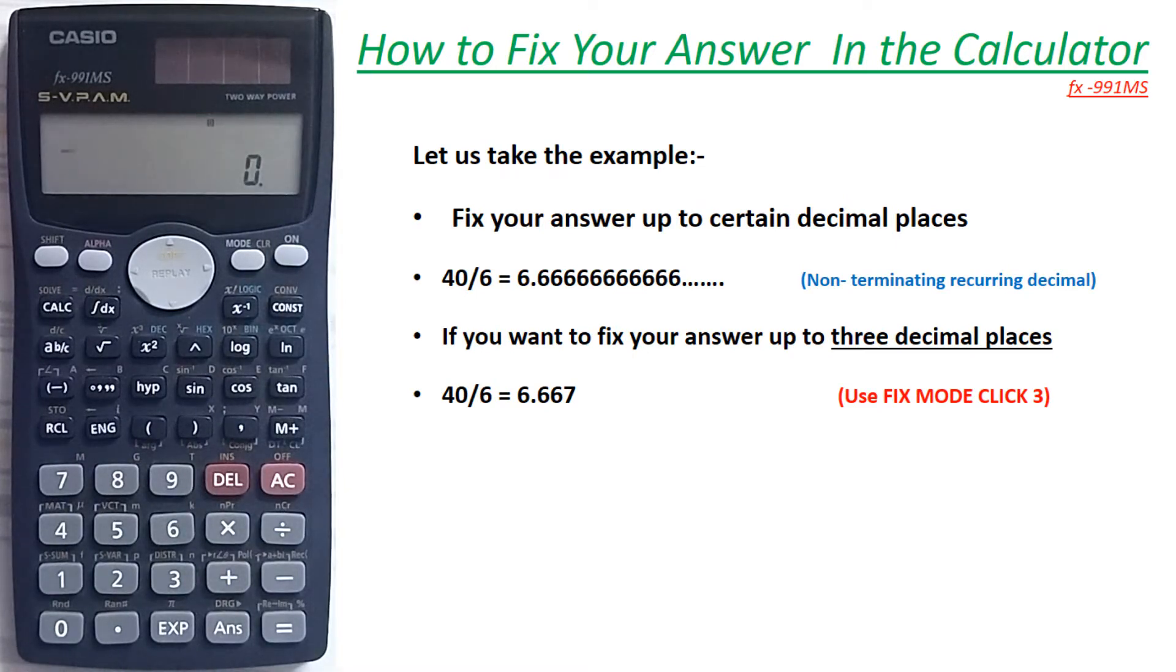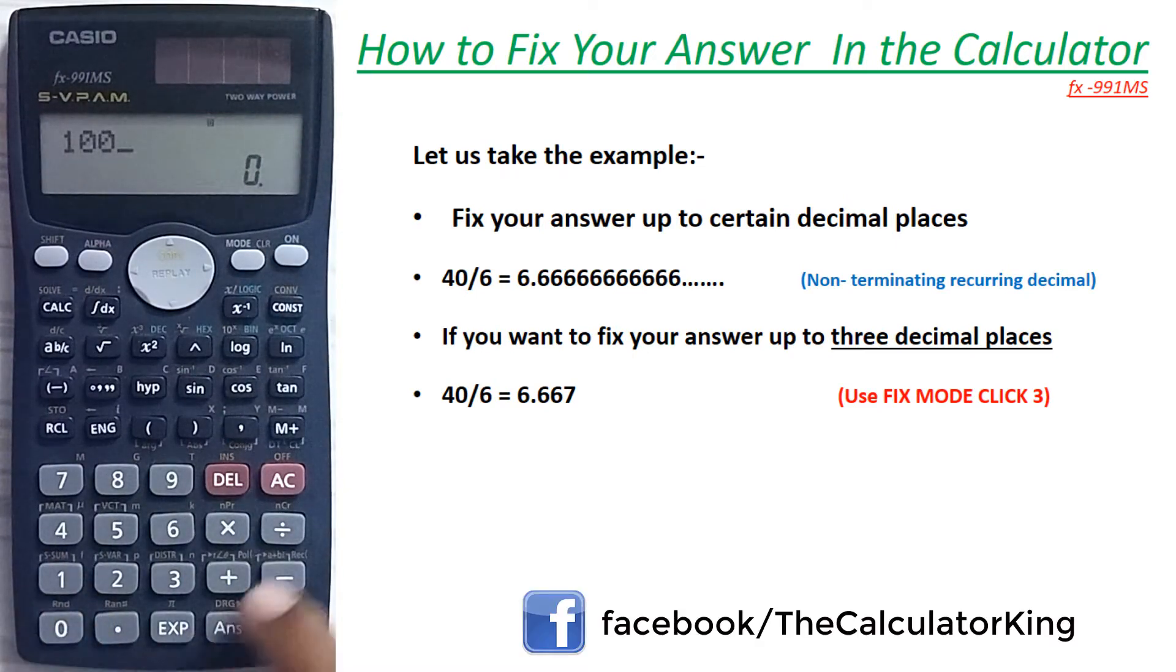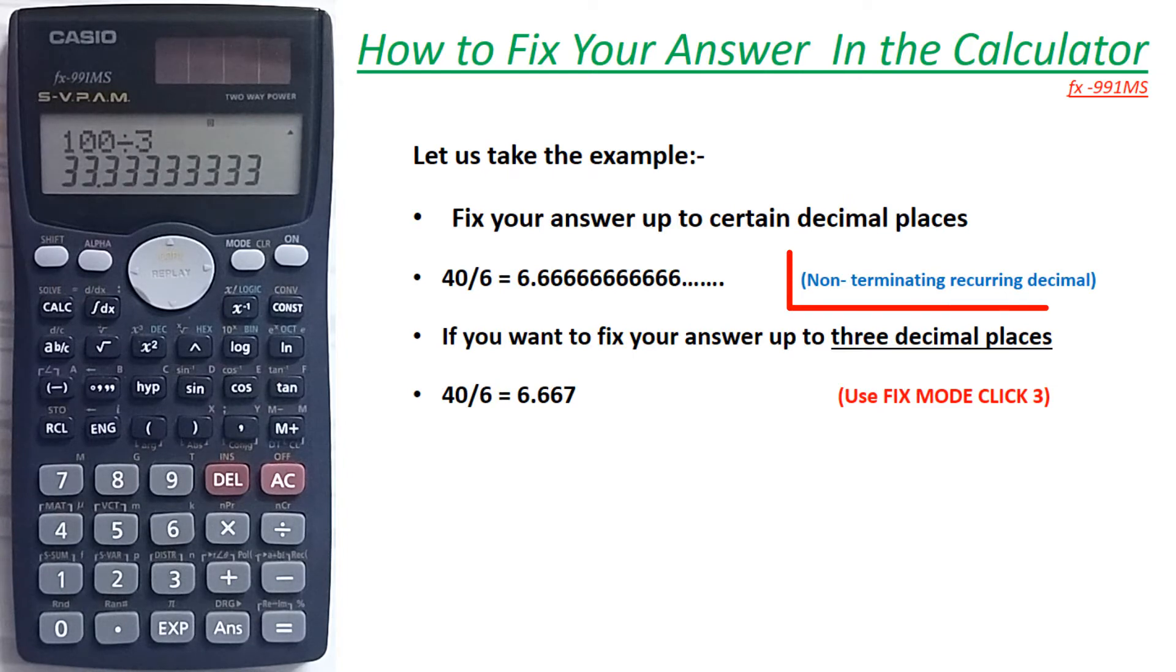100 divided by 3. Now you can see here, answer is 33.3333, means it is a non-terminating recurring form.